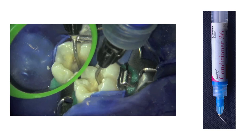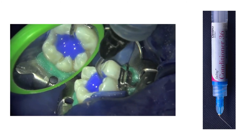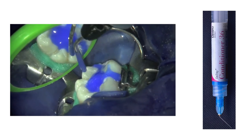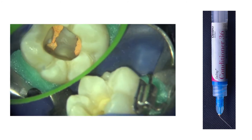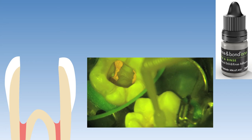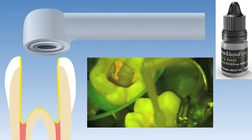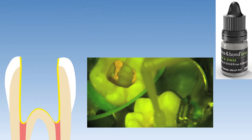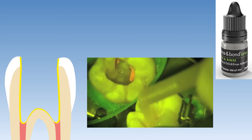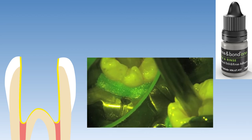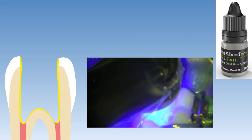The enamel and dentine were etched with phosphoric acid for 15 seconds, before the etchant was rinsed off thoroughly with water and lightly air dried with compressed air. A microbrush saturated with Prime & Bond etchant-rinse was used to infuse the bonding resin into the etched enamel and dentine surfaces for approximately 10 seconds, before it was light cured for 20 seconds after evaporation of the solvent. Here we can see this step being performed clinically — bonding resin application, solvent evaporation, and finally the light curing step.